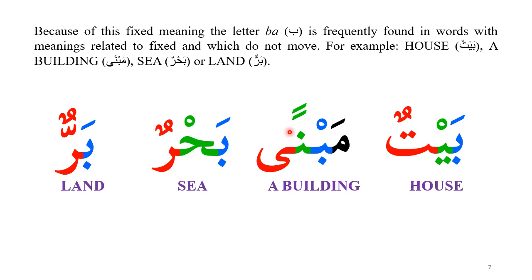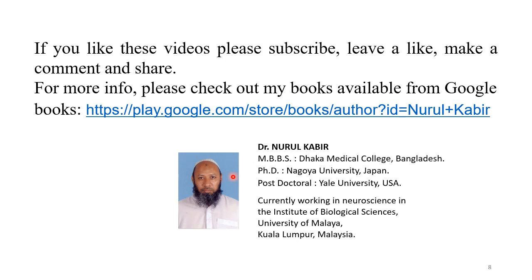Because of this meaning related to something fixed, the letter Ba is found in many words that characteristically do not move or are fixed. For instance, 'bayt' means house, 'mabna' means a building, 'bahar' means sea, and 'bar' means land — all things that do not move.